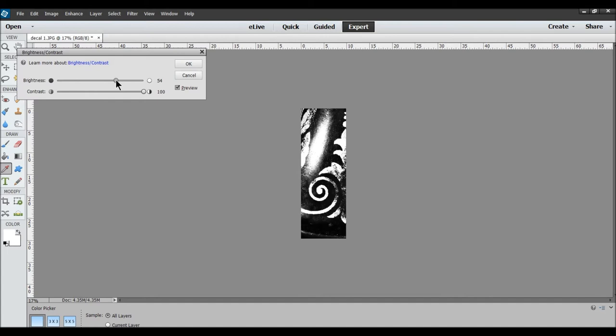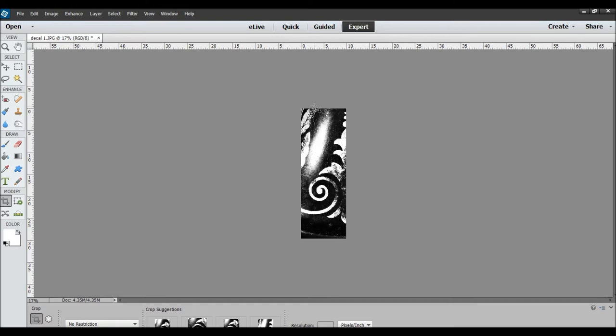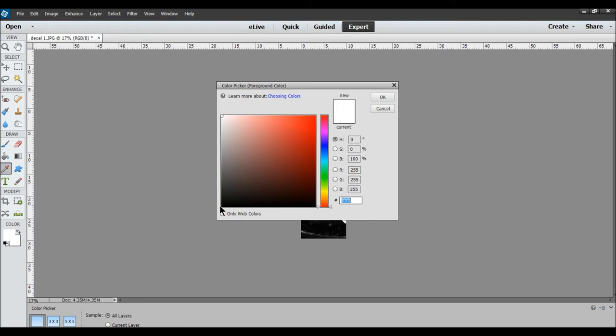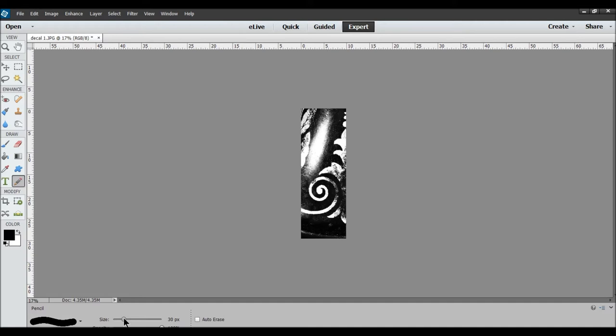Next, what we need to do is eliminate all of the glare and the decals that we're not going to be using. So, I'm going to go to Pencil. Black. And start erasing it, I mean, coloring over it. Try not to eliminate any of the decal that you want. Well, you get the idea.